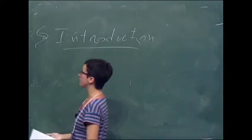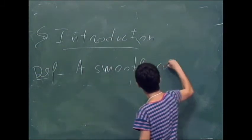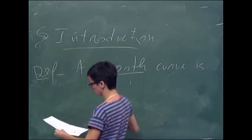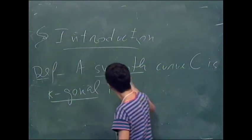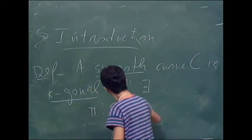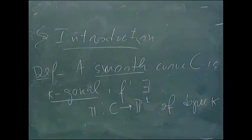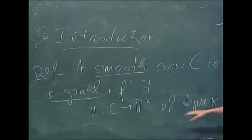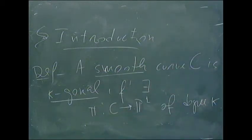I want to get to stable curves, but let's start with the gonality of a smooth curve. How do we define the gonality of a smooth curve? We say that a smooth curve C is K-gonal if it admits a map to P1 of degree K. Classically, the gonality is the smallest such K. So a smooth curve is K-gonal if there is a map of degree K from C to P1.